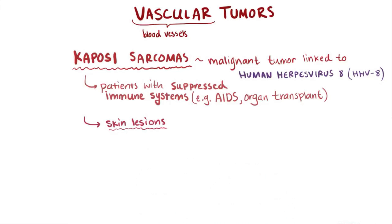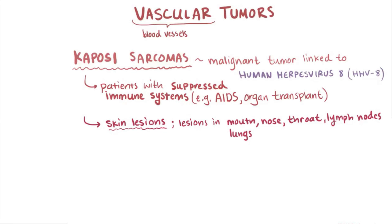In people who have a compromised immune system, the disease can cause lesions in other tissues like the mouth, the nose, the throat, the lymph nodes, the lungs, and the gastrointestinal tract.